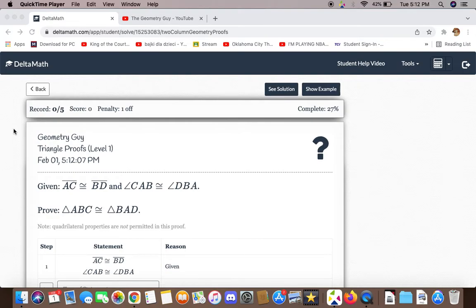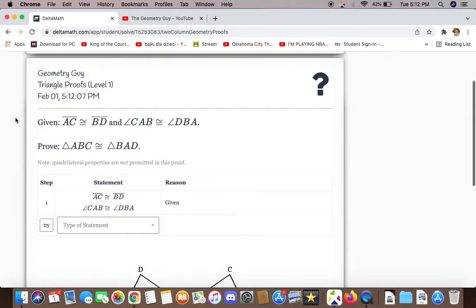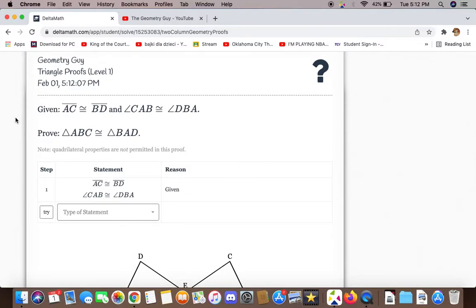Given line segments AC and BD are congruent to each other, and angles CAB and DBA are congruent to each other, we now have to prove that triangles ABC and BAD are congruent to each other.